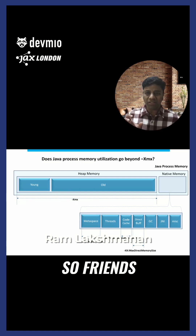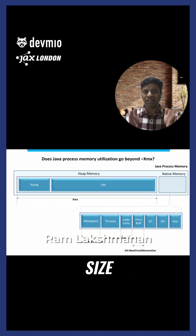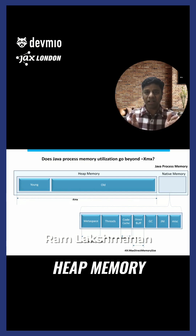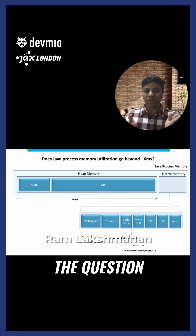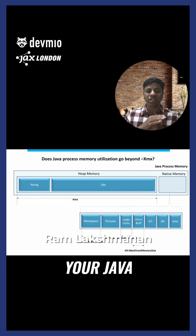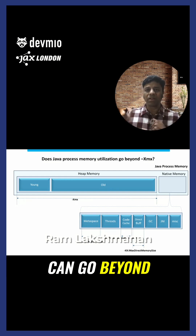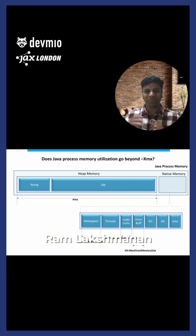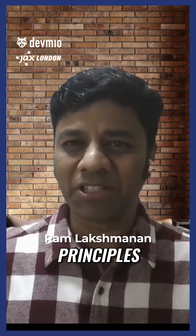When you set XMX, you are setting one important region's size — heap memory — but all the other regions are outside of XMX. So the answer to the question is yes: when you set XMX to 6 GB, the Java process memory can go beyond 6 GB, which is normal.